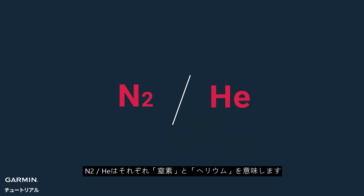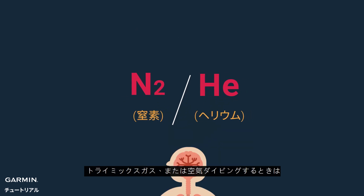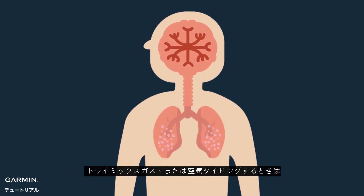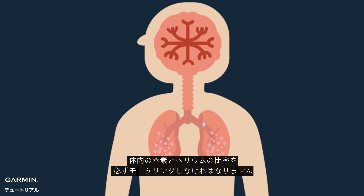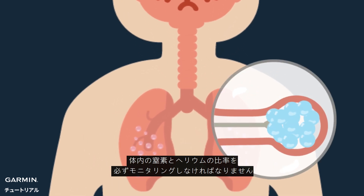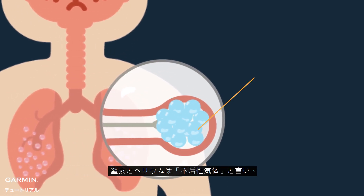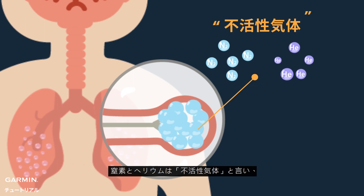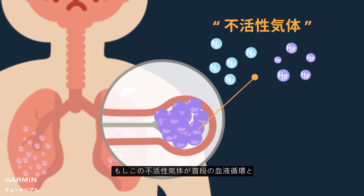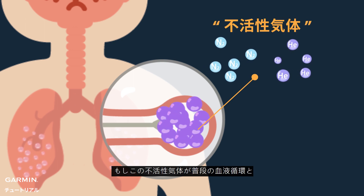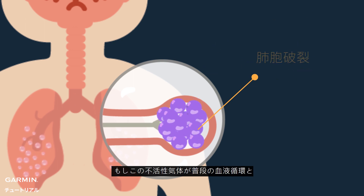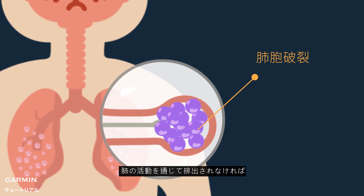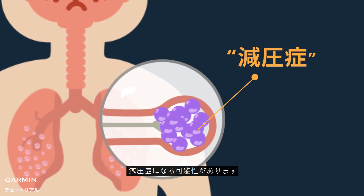N2HE refers to nitrogen and helium. Whether we use Trimix or air for the dive, we have to track the proportion of nitrogen and helium in our body. Nitrogen and helium are referred to as inert gases. If the inert gases don't come out of the body through normal blood circulation or the general air exchange mechanism in the lungs, it may cause decompression sickness.